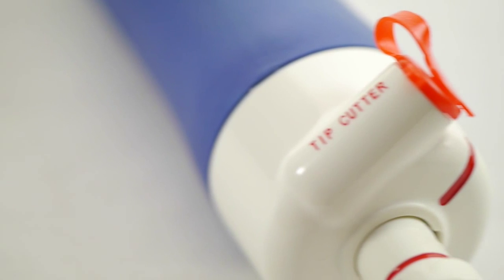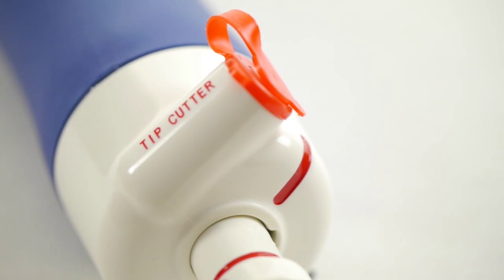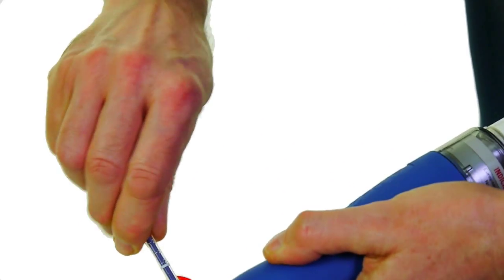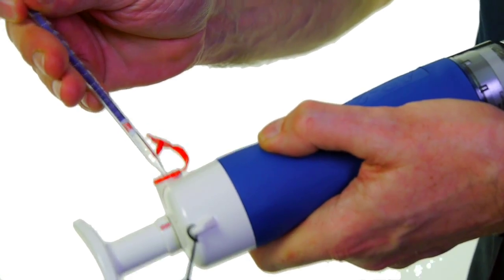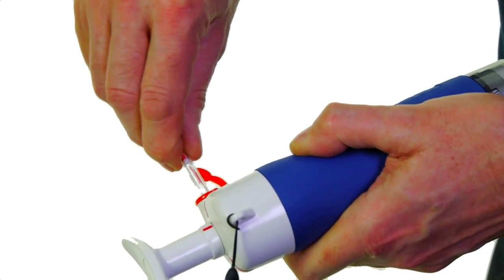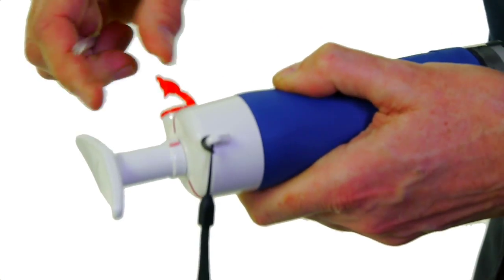It's a nice simple four stage system to use. First thing you do is using the cutter that's built into the tube, cut the ends off of the tube. Simple as that. That tube is now ready to use.